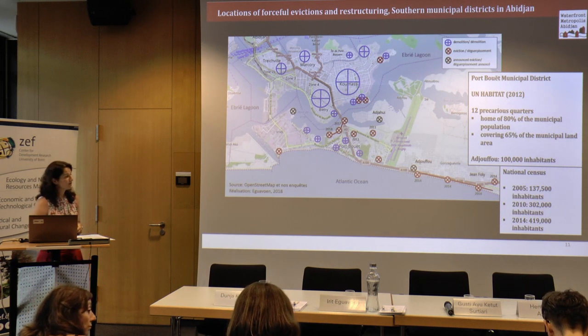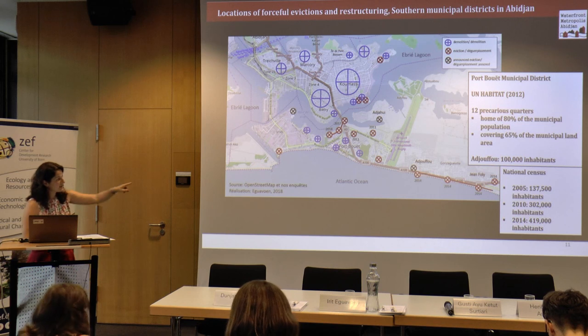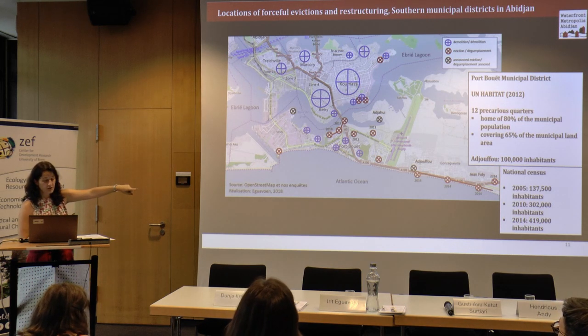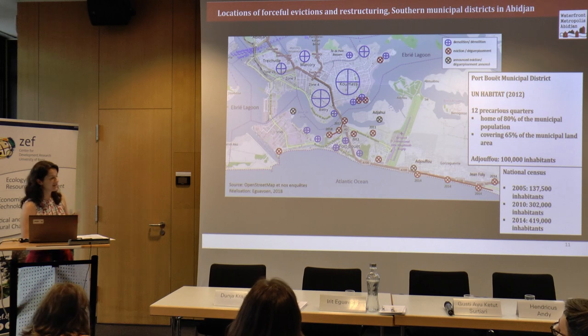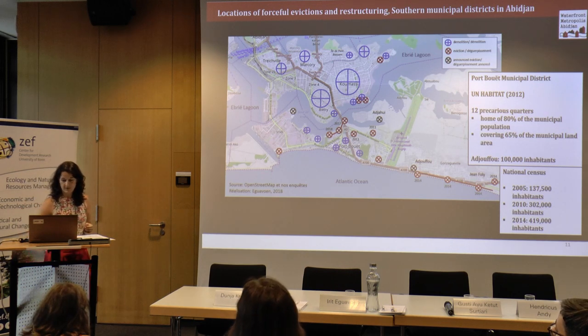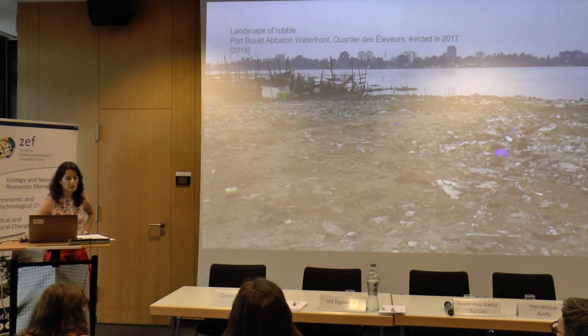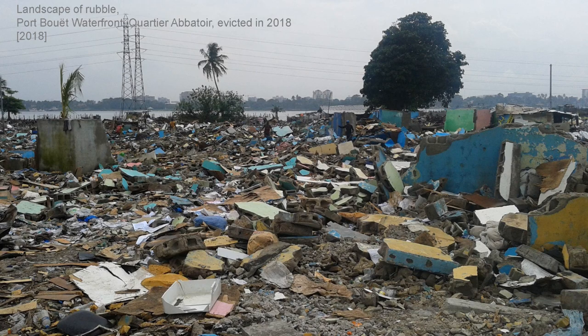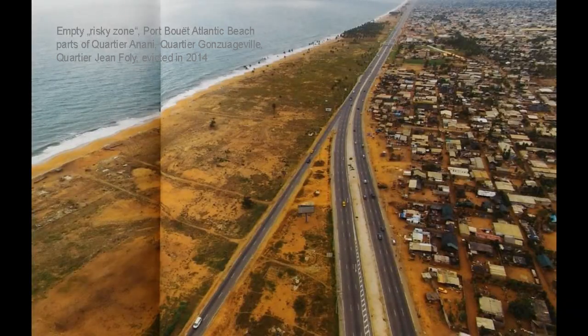The city administration of Abidjan pursued strategies of short-term crisis management. In 2014, they evicted settlements by the beach, and 10,000 people lost their homes.